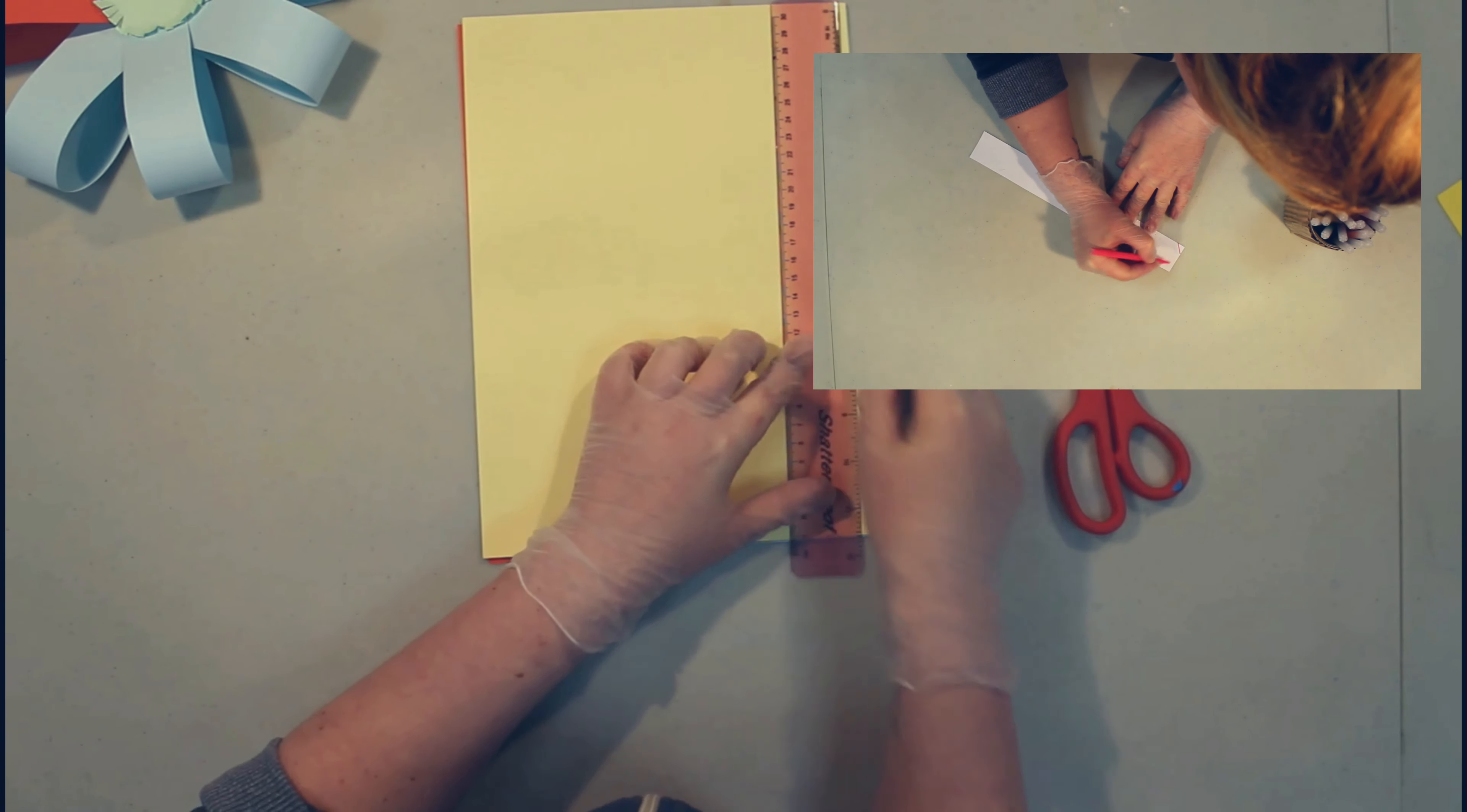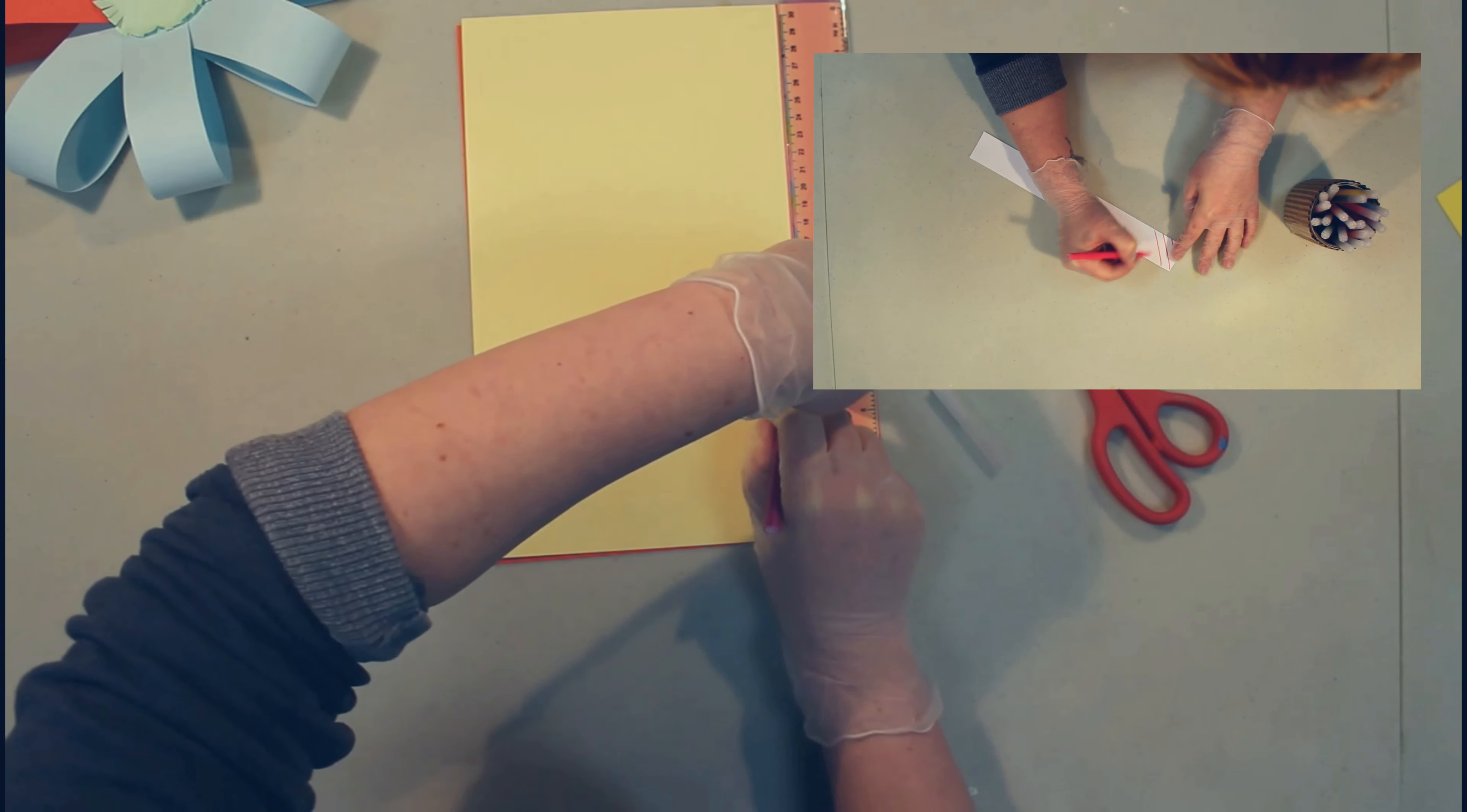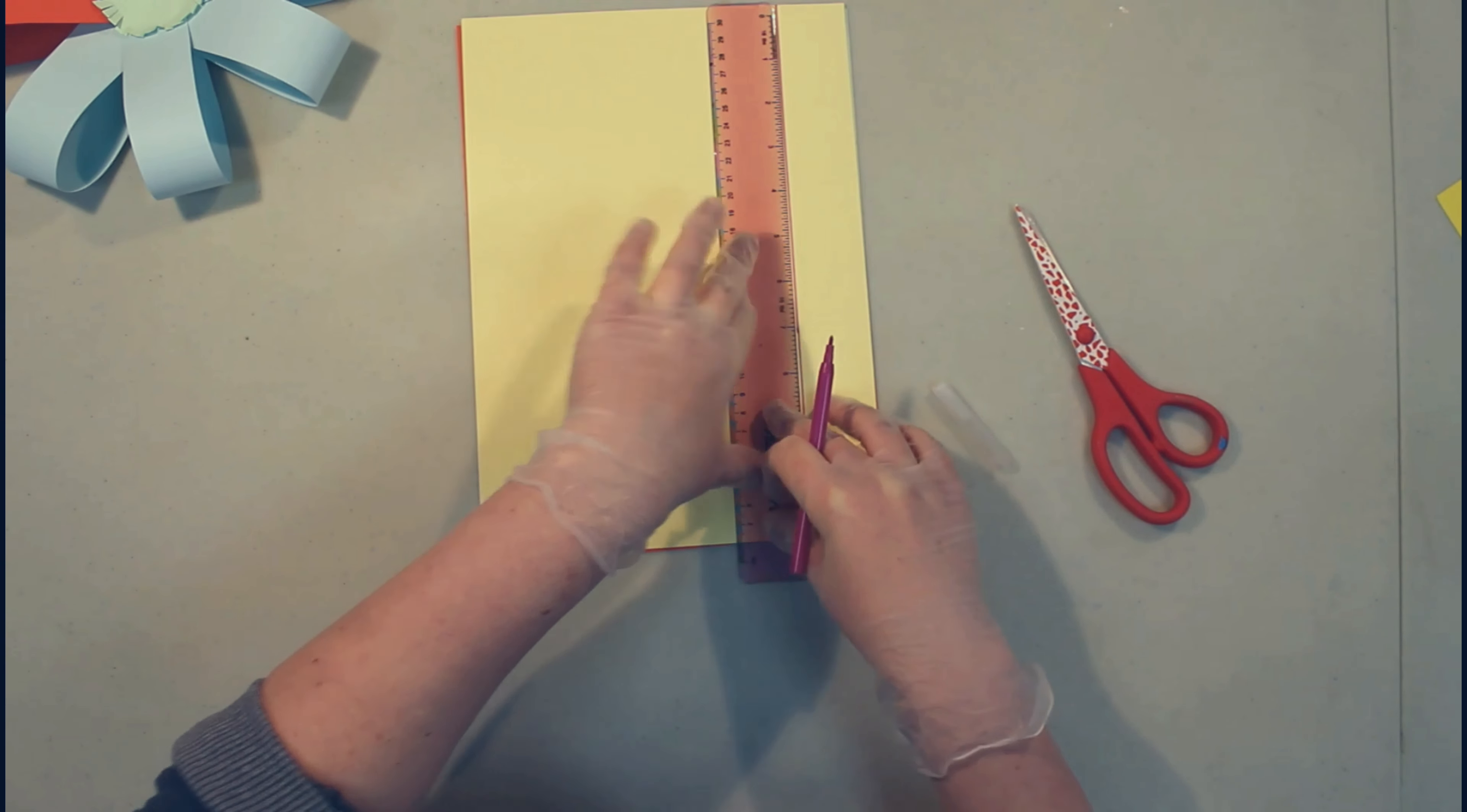Now let's take our ruler and draw two sets of lines down the card. Now we have four sheets of card, two lines, so once we cut this out we'll make eight strips.